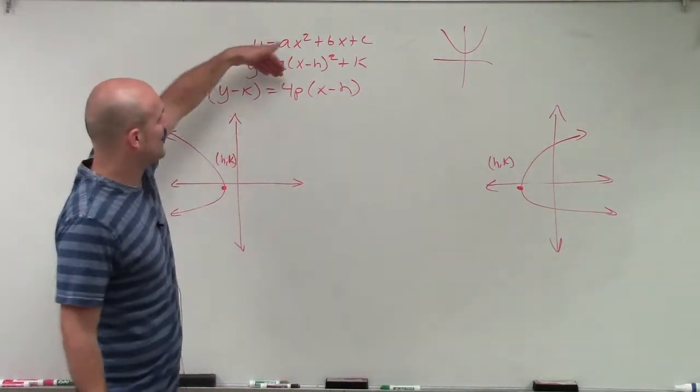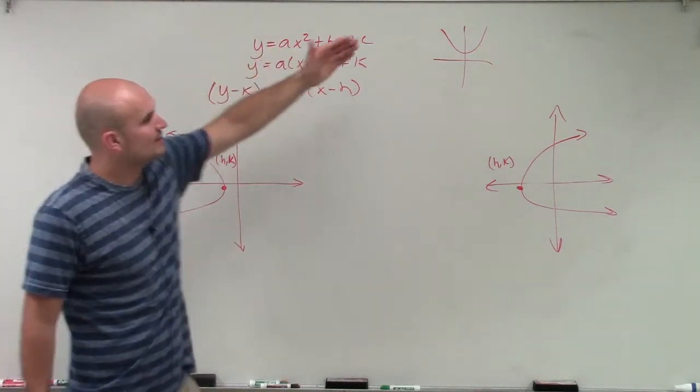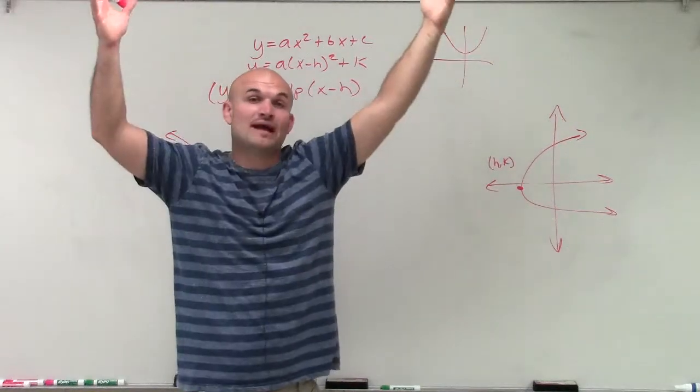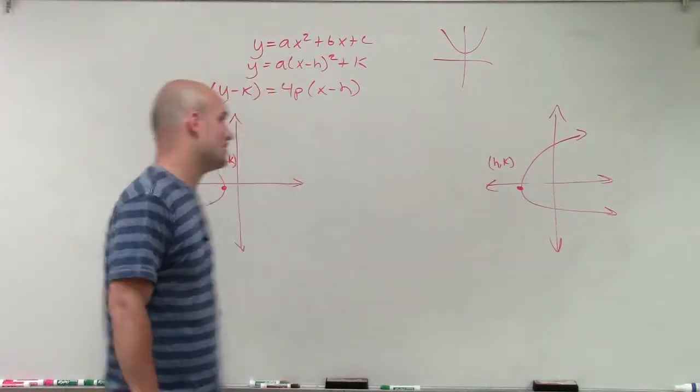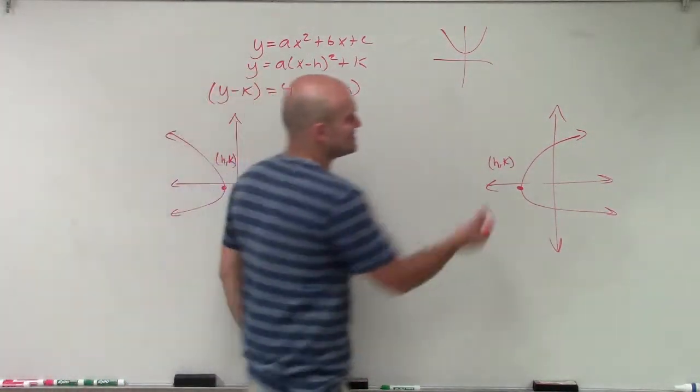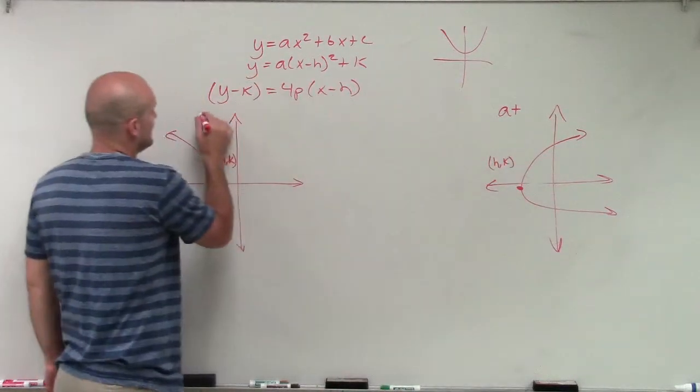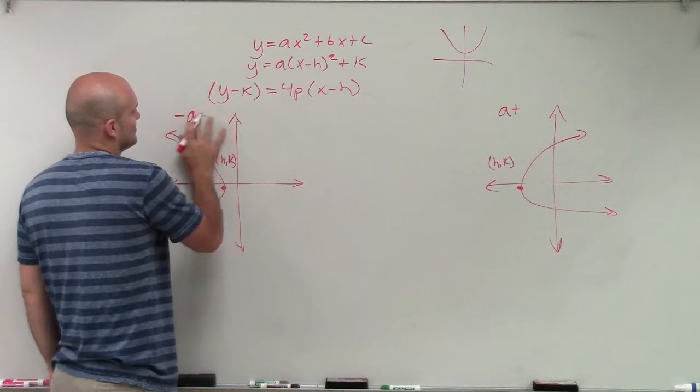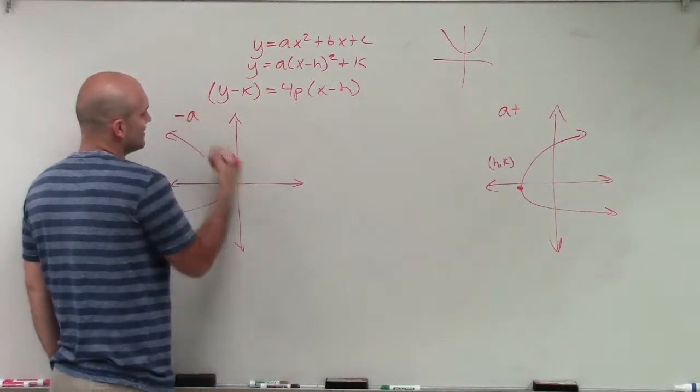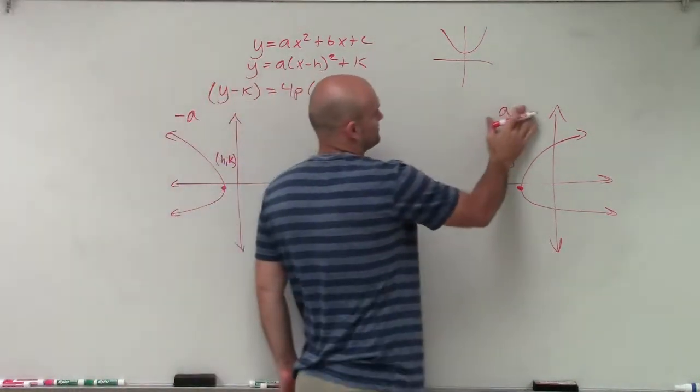And the exact same thing, remember when a was positive, that means my parabola opened up. And when a was negative, that means my parabola opened down. Well, in this exact same case here, when a is positive, my parabola opens up. And here, when my a is negative, when my a is negative, that means I'm going to open to the left.